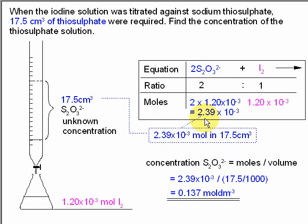The information that we now know is 2.39 times 10 to the minus 3 moles of thiosulfate are in 17.5 cm cubed. So to work out the concentration, take the moles, divide by the volume. There's the moles, there's the volume being converted into dm cubed, and here 0.137 moles per dm cubed is the concentration of the thiosulfate solution.